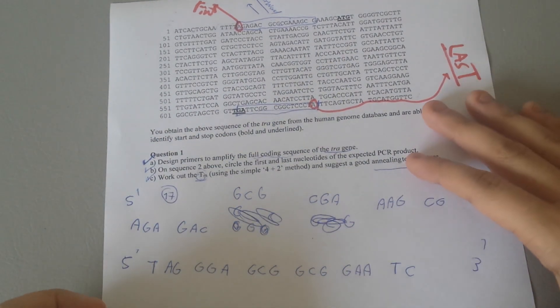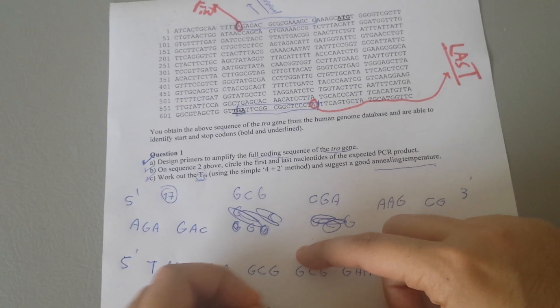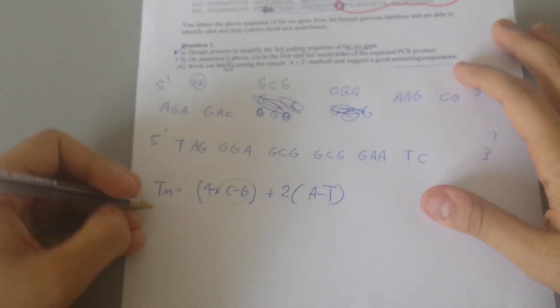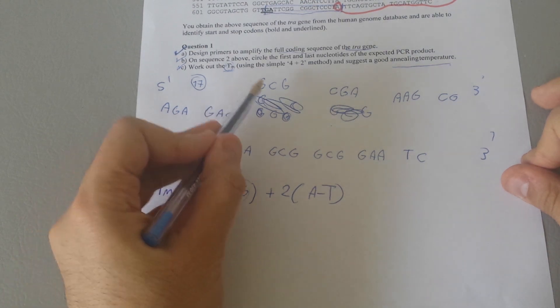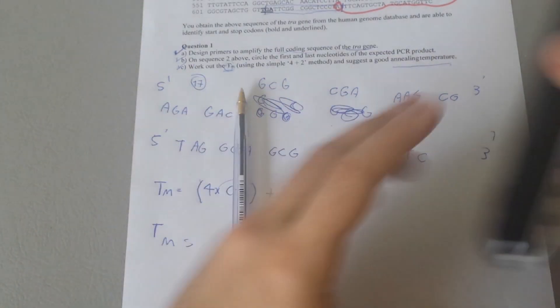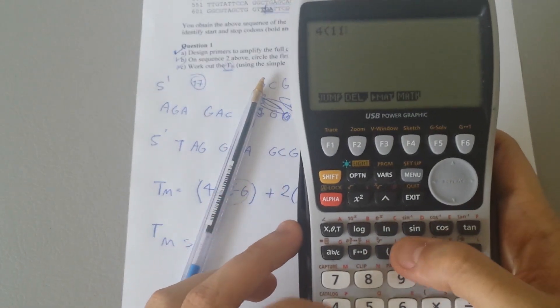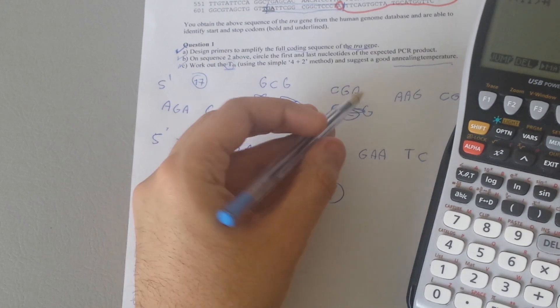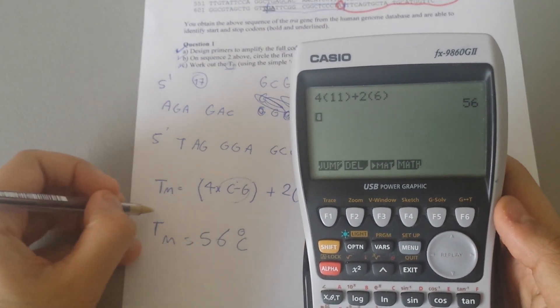We have to work out the Tm temperature. The rule is 4 times CG plus 2 times AT. So it means how many nucleotides of CG we have, we times it by 4. How many AT we have, we times it by 2. Let's see how it goes. So Tm: CG, how many CG do we have? 1, 2, 3, 4, 5, 6, 7, 8, 9, 10, 11. We have 11. So we have 4 times 11, and how many AT we have is 8. So it gives us 56 degrees Celsius.